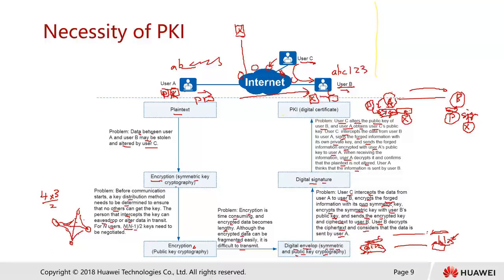The issue is that C, as a hacker, can also forge a signature and fill in all the information pretending to be A. When B receives the message and uses A's public key to decrypt the signature, the signature may verify correctly — but this 'A' could actually be a fake A, it could be C. This is why we move to the next stage: PKI infrastructure, which involves a trusted third party.